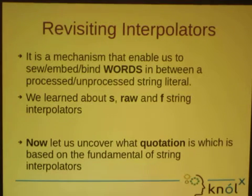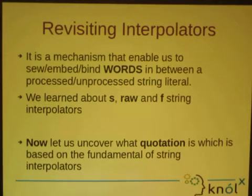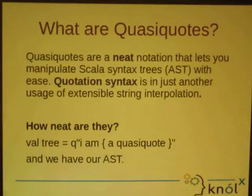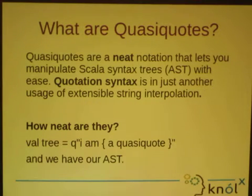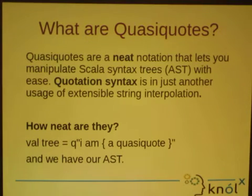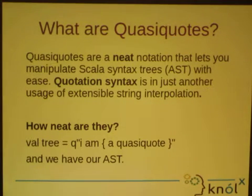Quotations are something which is based on the concept of string interpolation, but the difference is that it includes AST manipulation and all the other stuff. The basic principle stays the same as what we had for string interpolators. Quasi-codes are a neat notation — a way that AST manipulations and AST creation can be conducted. It's called quotation syntax and it's just another use of extensible string interpolation.